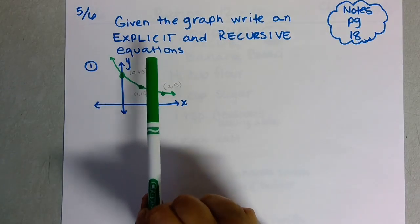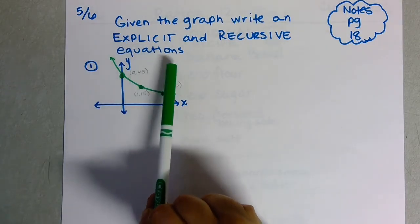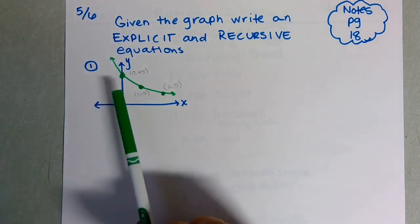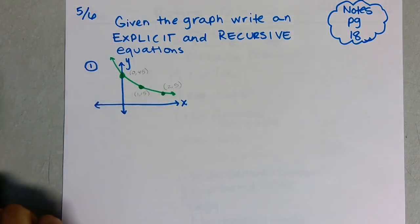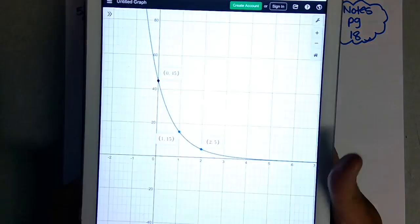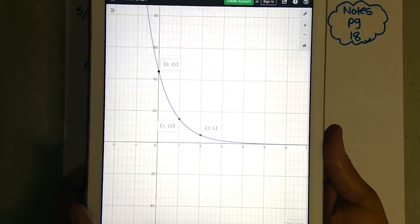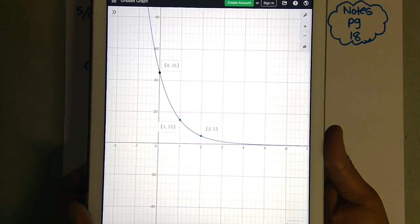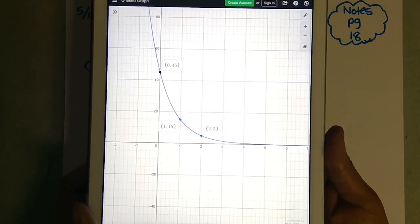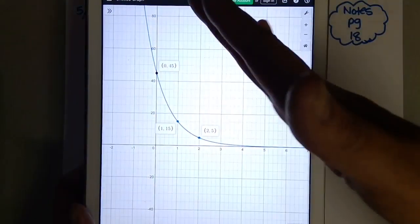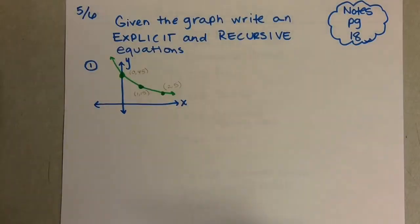Today we are doing the same as yesterday—writing explicit and recursive equations—but we're given a graph. The first thing you have to do is recognize that this graph is definitely not linear. This is actually exponential decay, so you have exponential growth and exponential decay. This is actually going down, so it's exponential decay.